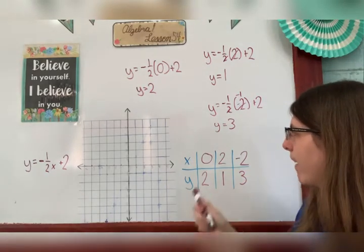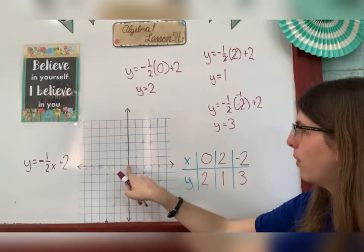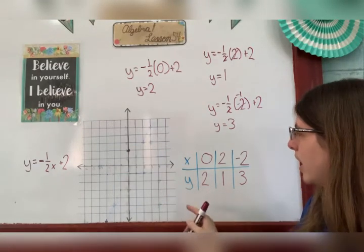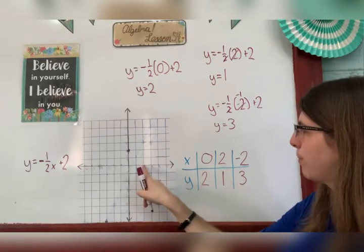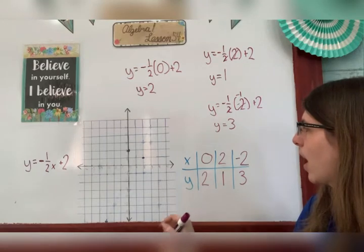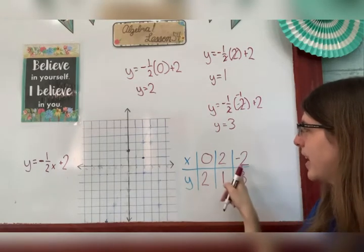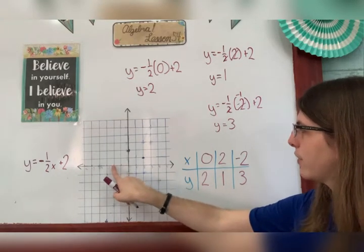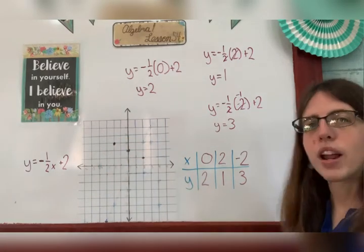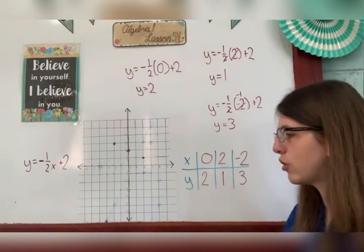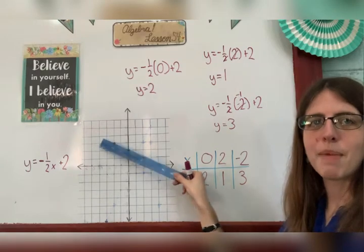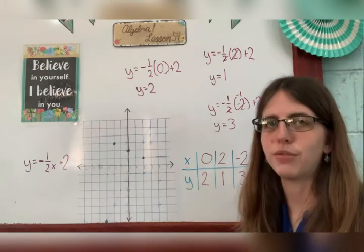Now I'll graph it. x equals 0, y equals 2 — right there. x equals 2, y equals 1. x equals negative 2, y equals 3. Before I even draw the line, can you see that this would be a straight line? Yes, it would. I'm actually not going to draw the line right now just for time's sake. Let's move on to the third example.